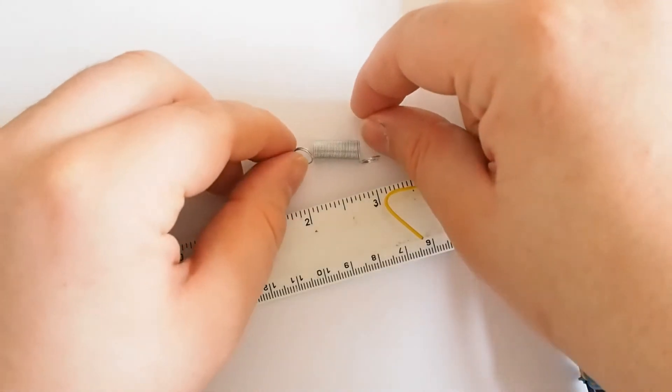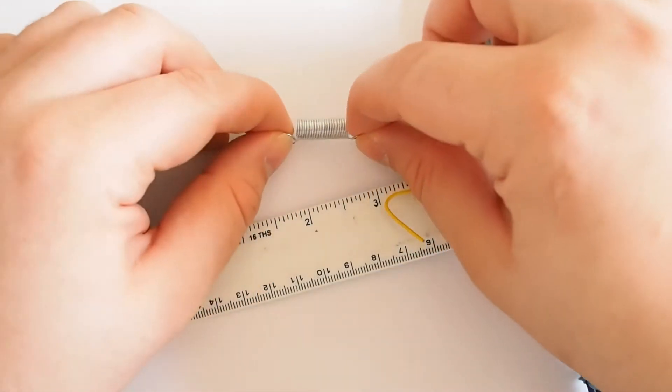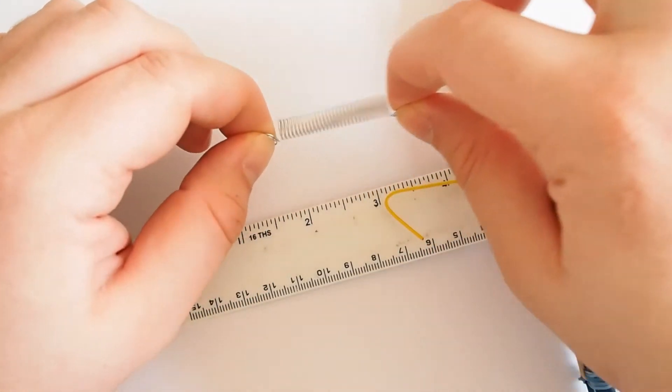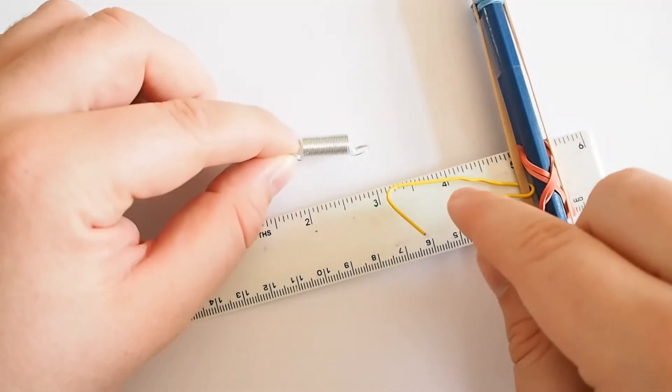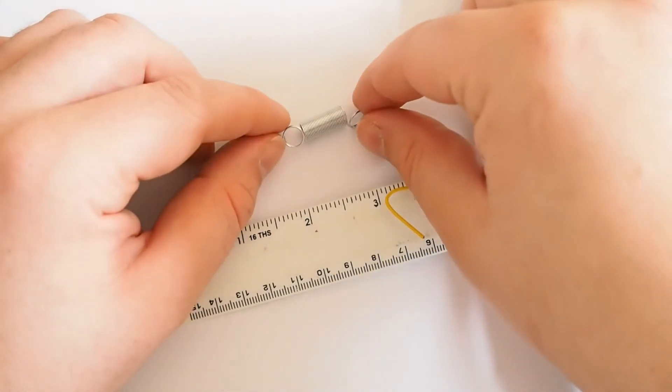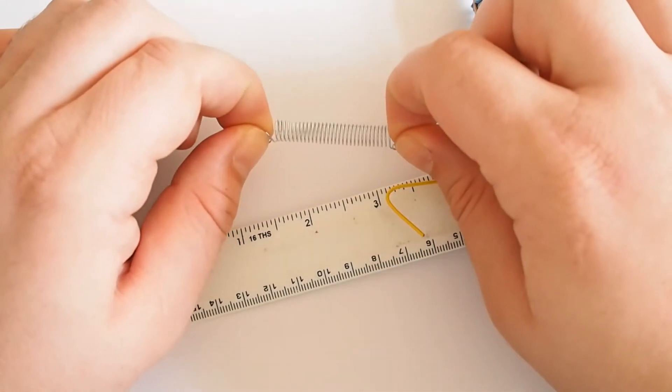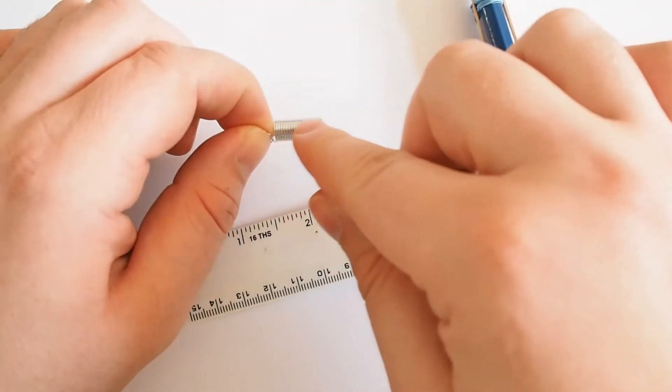Right, so I've got this little spring here, and what I'm going to do is measure the extension of the spring when I apply a force. Now, remember the extension of the spring is equal to the distance it extends minus the original distance.